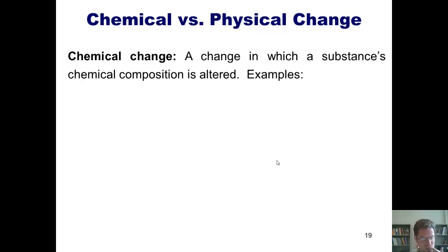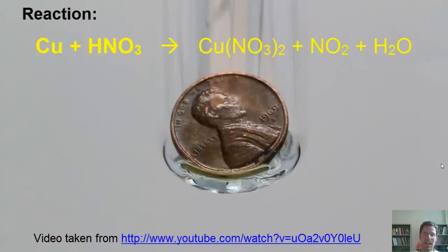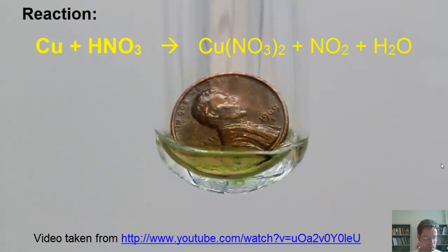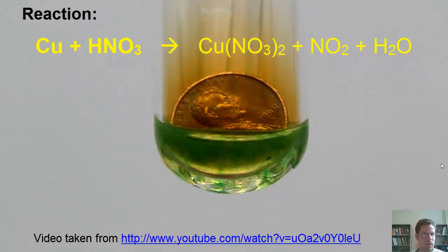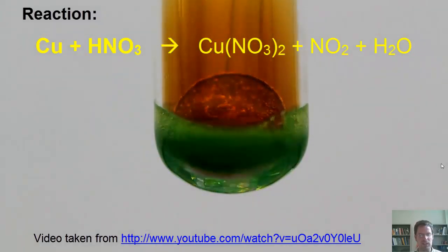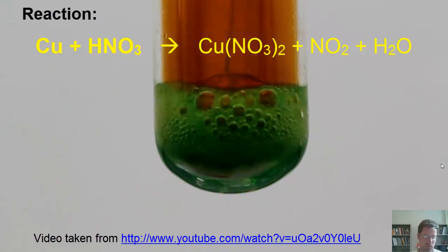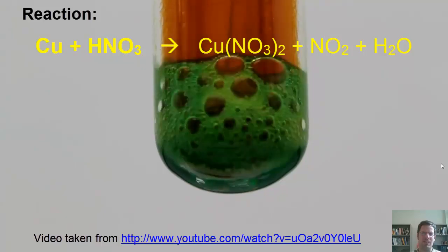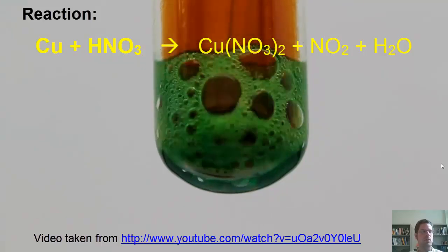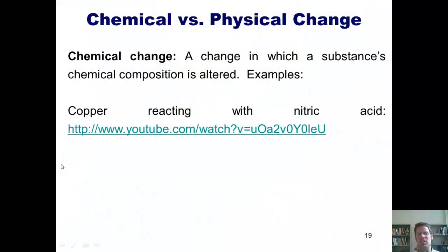This brings us to the next question. What is a chemical change? A chemical change is a change in which a substance's chemical composition has been altered. One example is when we react a copper penny with nitric acid. The copper, whose chemical formula is Cu, interacts with the nitric acid to form a new compound called copper nitrate. Does copper nitrate have a different chemical formula from the original copper? You bet it does. So is this a chemical change instead of just a physical one?